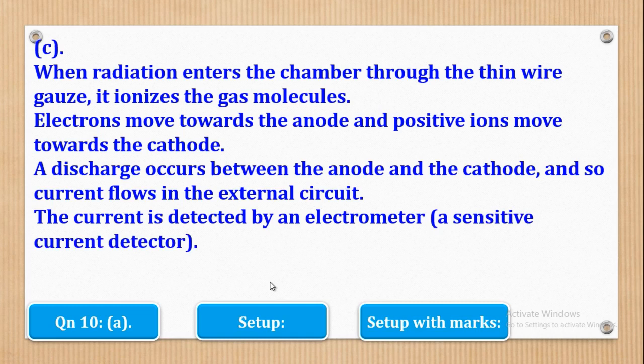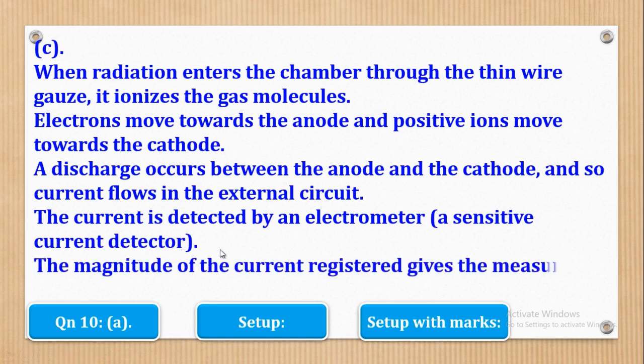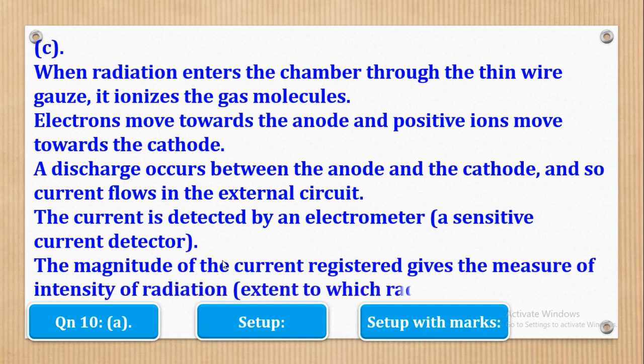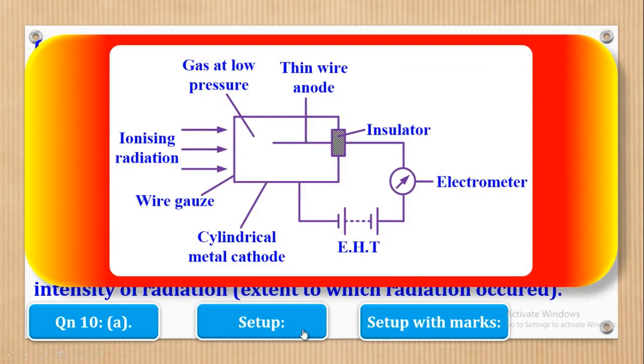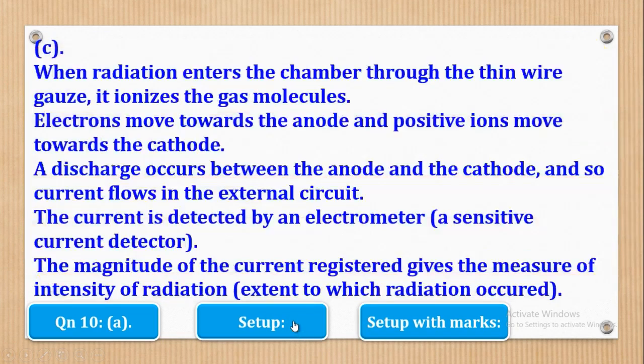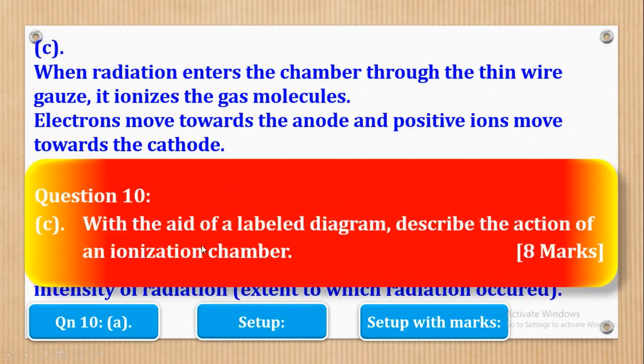The current is detected by an electrometer or a sensitive current detector. So this is the electrometer which detects the current, the flow of current. So the magnitude of the current registered gives the measure of the intensity of radiation. So basically that's how an ionization chamber works.